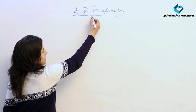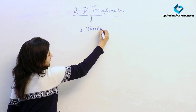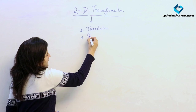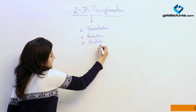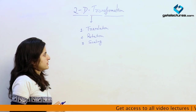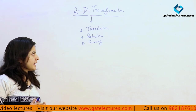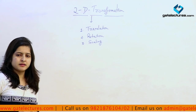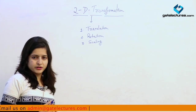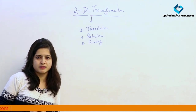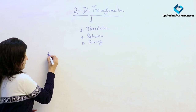The basic 2D transformations which we apply in computer graphics objects are translation, rotation, and scaling. Translation means to change the location of an object. Rotation means to rotate the object — it can be rotated on the basis of its origin or about another point. Third is scaling, which is used to change the size of the object. Except these, we are also having other transformations like reflection and shear. First, starting with translation.